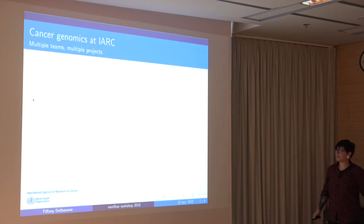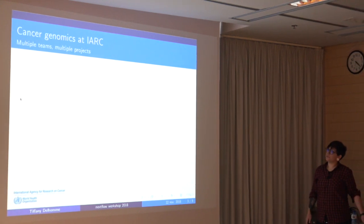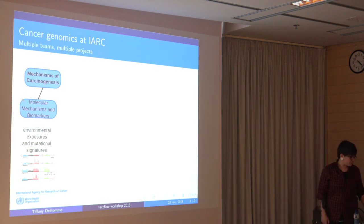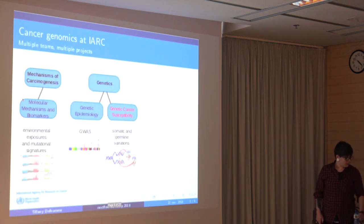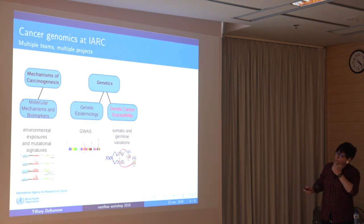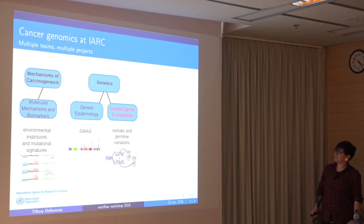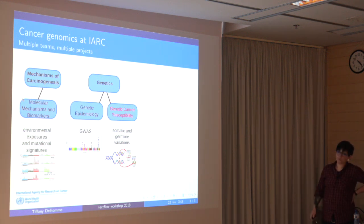There are multiple teams in the IARC working on cancer genomics. In the section of mechanisms of carcinogenesis, there is a group on molecular mechanisms and biomarkers, working mostly on mutational signatures and environmental exposures. There is also the section of genetics — the group where I work, the genetics cancer susceptibility group — mostly working on somatic and germline variation detection for cancer analysis, as well as cancer susceptibility. The second group in the genetic section is the genetic epidemiology group, which works mostly on genome-wide association studies.